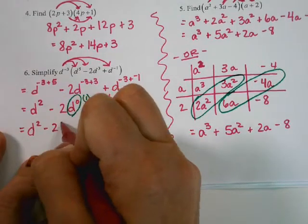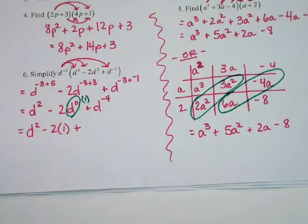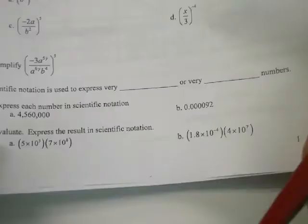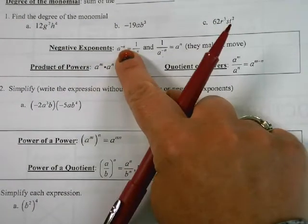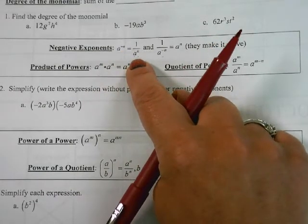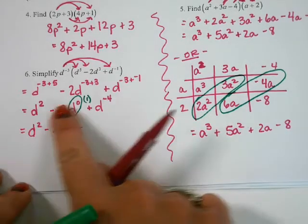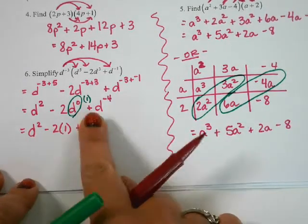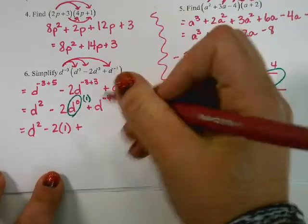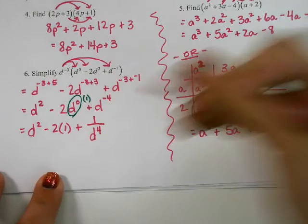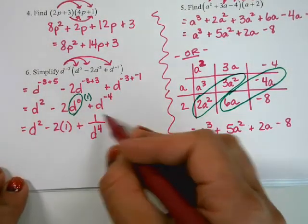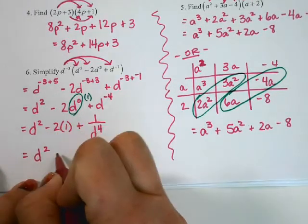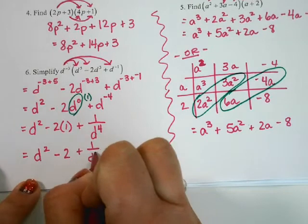So let's clean it up. We have d squared, minus 2 times 1 which is just minus 2. For the negative exponent, d to the negative 4 moves to the denominator and becomes 1 over d to the 4th — and it's not dividing the other terms, it's just added on. So the final answer is d squared minus 2 plus 1 over d to the 4th.